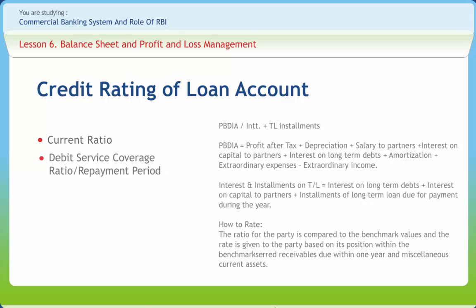DSCR measures the number of times a party's cash profits covers its repayment obligations over a period of one year. This ratio is a good indicator of the long-term solvency of a party and its ability to service its debt obligations. The way to measure and how to rate are written on the right-hand column.